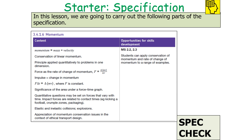If we've been successful and learned in today's lesson, we should be able to address this part of the AQA A-level physics specification: 3.4.1.6 momentum.